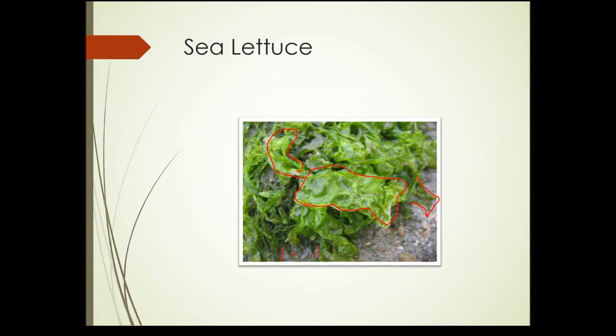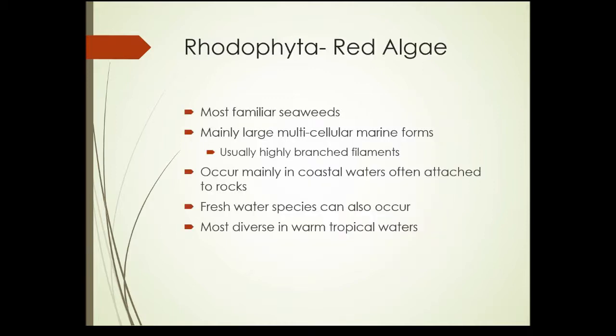Next we'll take a look at some of the red algaes. The red algaes contain the most familiar seaweeds to humans. They're mainly large multicellular marine forms — marine means salt water. They usually occur as highly branched filaments, mainly in coastal, shallower waters, often attached to rocks.